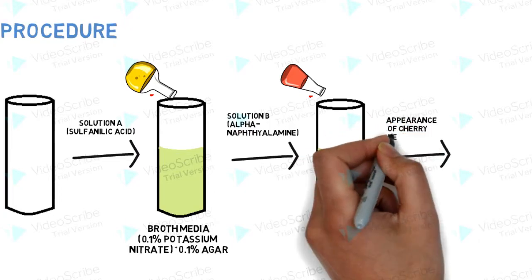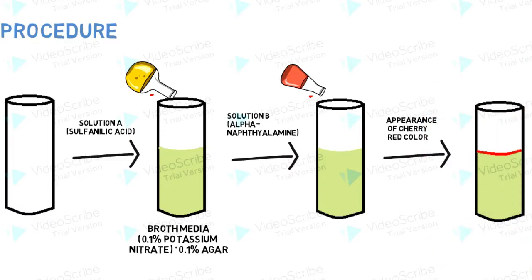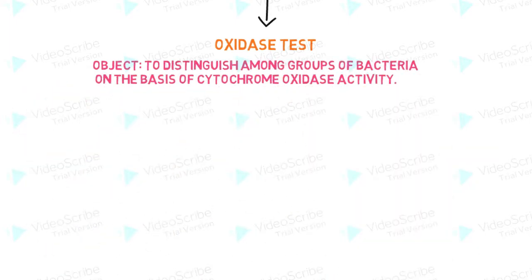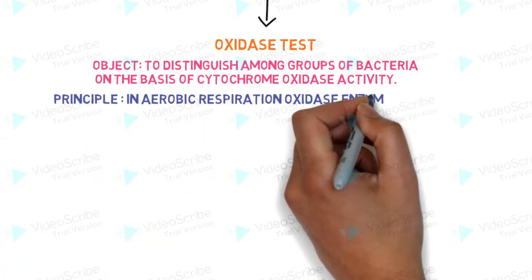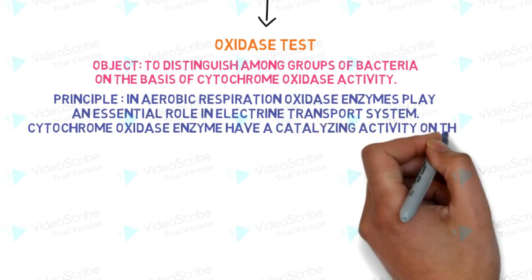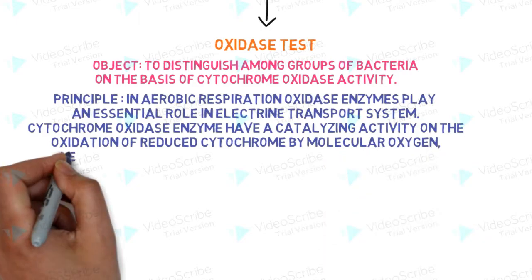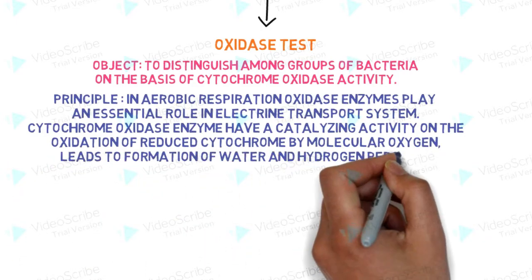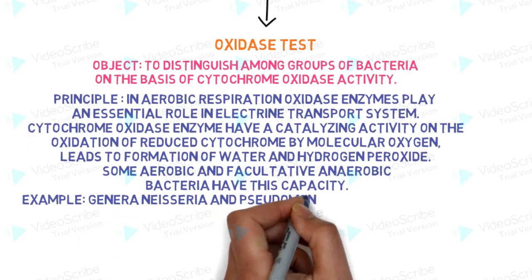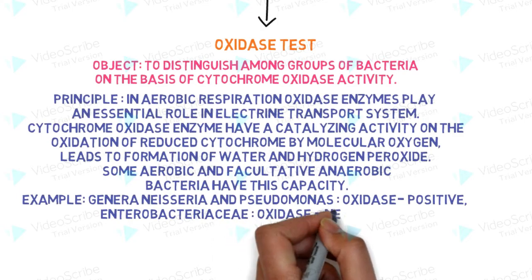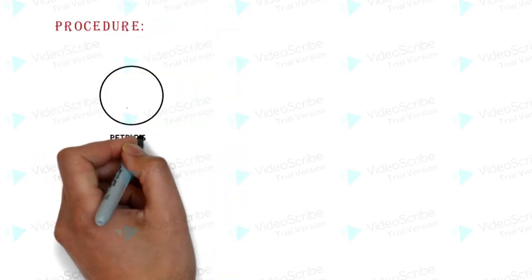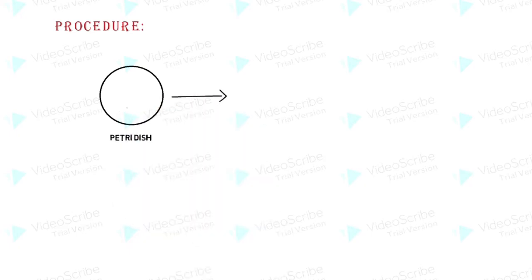Interpretation of result: the appearance of a cherry red colour ring represents a positive Nitrate Reduction Test. Oxidase Test: to distinguish among groups of bacteria on the basis of cytochrome oxidase activity. In aerobic respiration, oxidase enzymes play an essential role in the electron transport system. Cytochrome oxidase enzymes catalyze the oxidation of reduced cytochrome by molecular oxygen, leading to the formation of water and hydrogen.